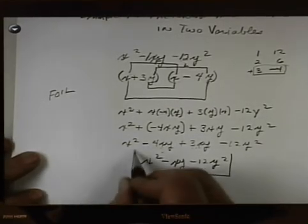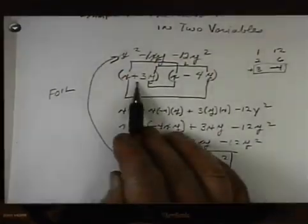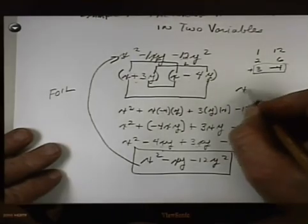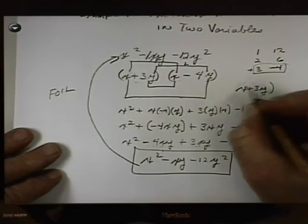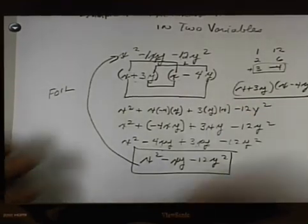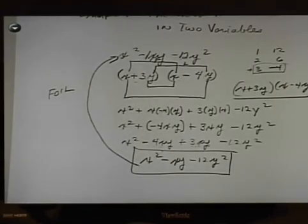This is the same as what we started with. So these are the factors. The factors are X plus 3Y times X minus 4Y. That's the end of Example 7.